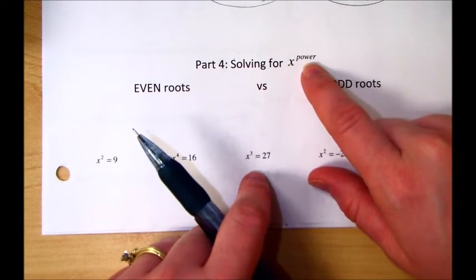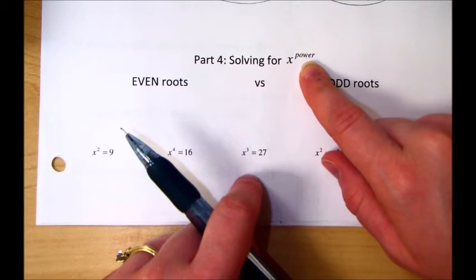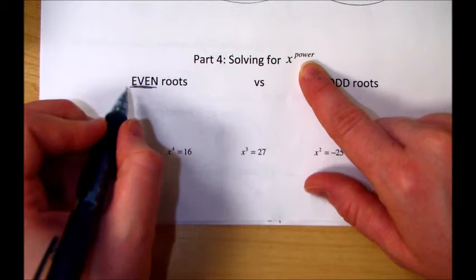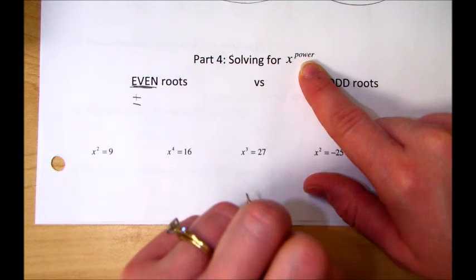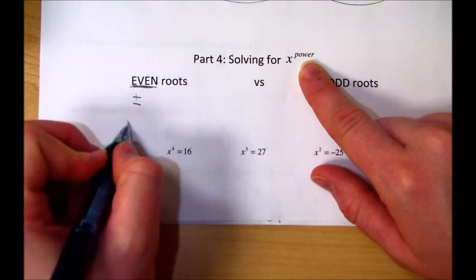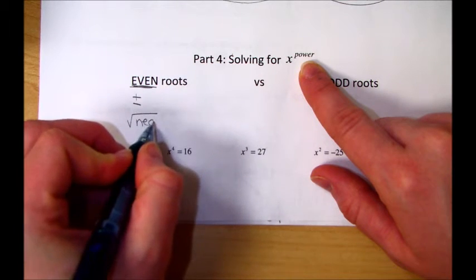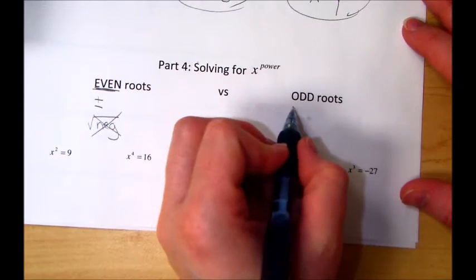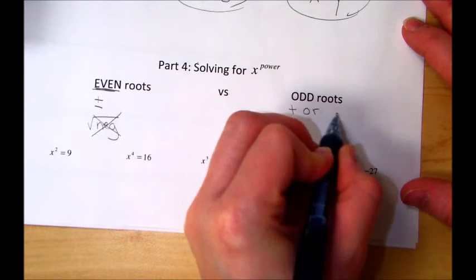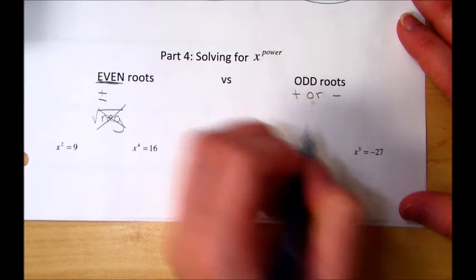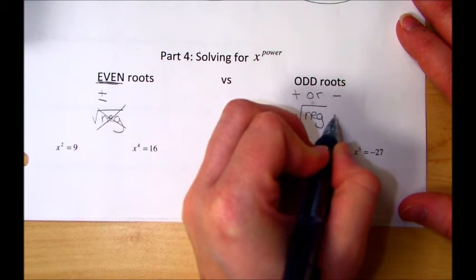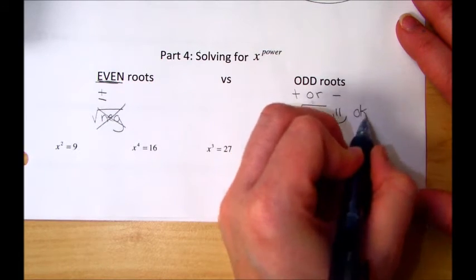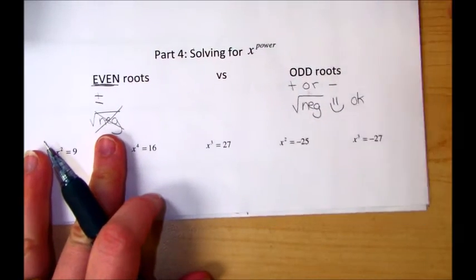Now let's say that we're solving for x and x has a certain power. Well, if that power is even, when you solve for x, you have to use plus and minus. Please remember, you cannot take the root of a negative with evens. That is not okay. With odds, you will either use positive or negative. You will not use both. And you are allowed to have the square root of negative. That is okay. Or the cube root or a fifth root, an odd root of a negative.